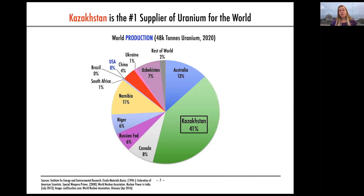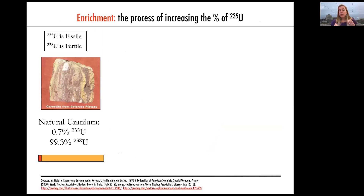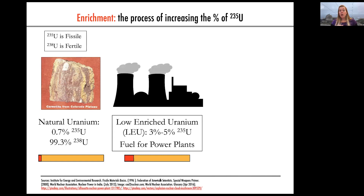Most of the uranium in the world comes from Kazakhstan, which now provides over 40% of the world's uranium. But uranium straight from the ground is not ready to put into a power plant — we have to do a process called enrichment. We increase the portion of fissile U-235 among the fertile U-238. Natural uranium is less than 1% fissile material, and for power plants we need to enrich it to 3% to 5%.